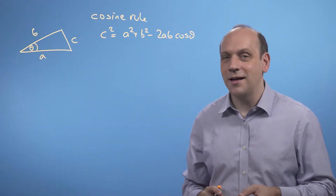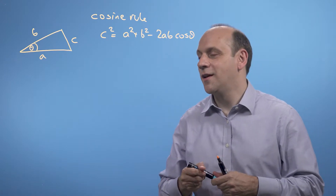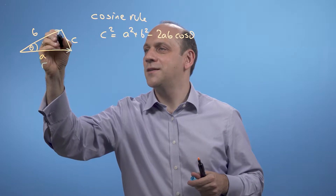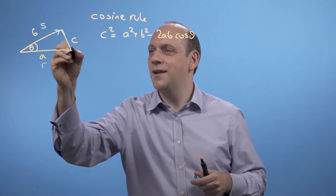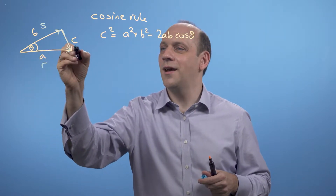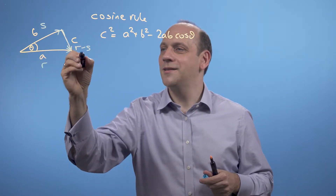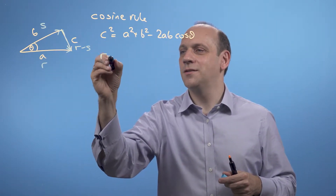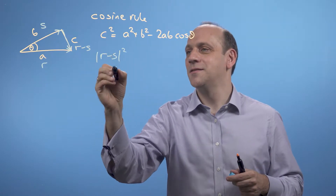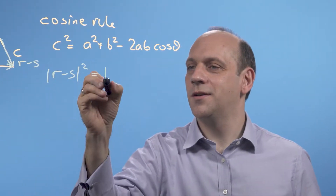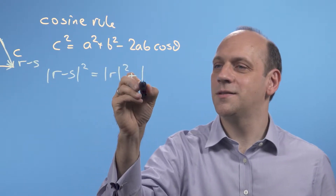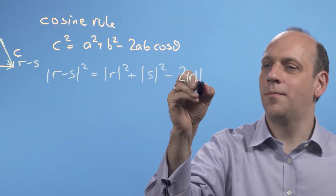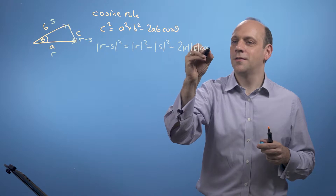Now we can translate that into our vector notation. We call this vector r here, and we call this vector s here. Then this vector would be r minus s. So we could say that c squared was the modulus of r minus s, squared. And that would be equal to the modulus of r squared plus the size of s squared minus 2 mod r mod s cos theta.